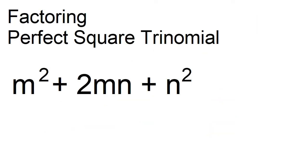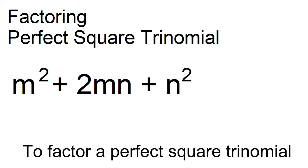Example: m squared plus 2mn plus n squared. Note that the middle term is just twice the product of the square root of the first term and the square root of the third term. Factor m squared plus 2mn plus n squared.